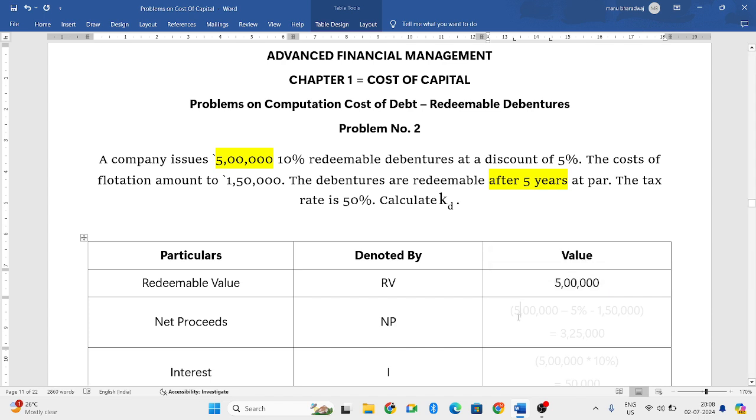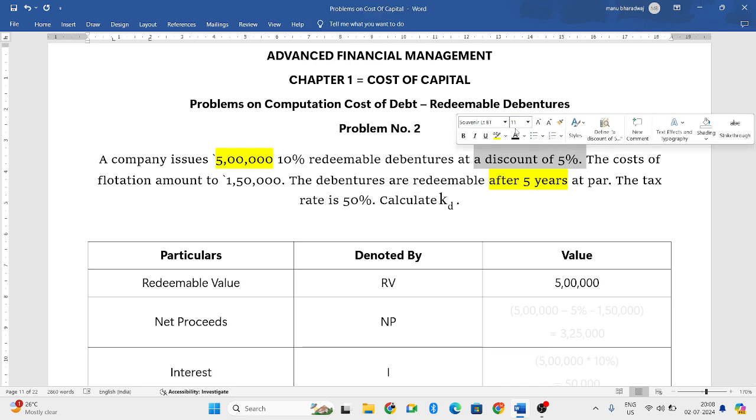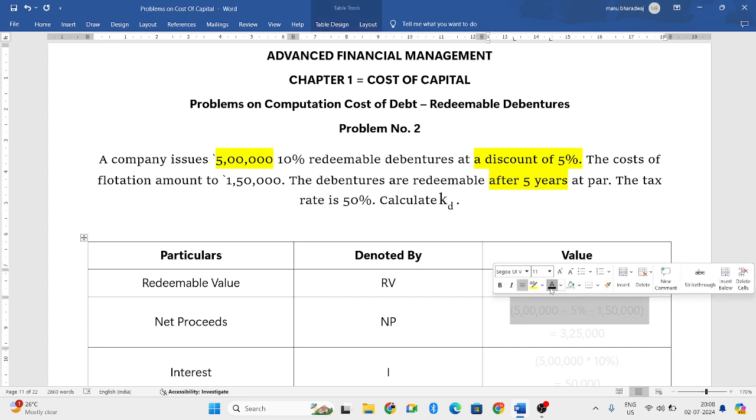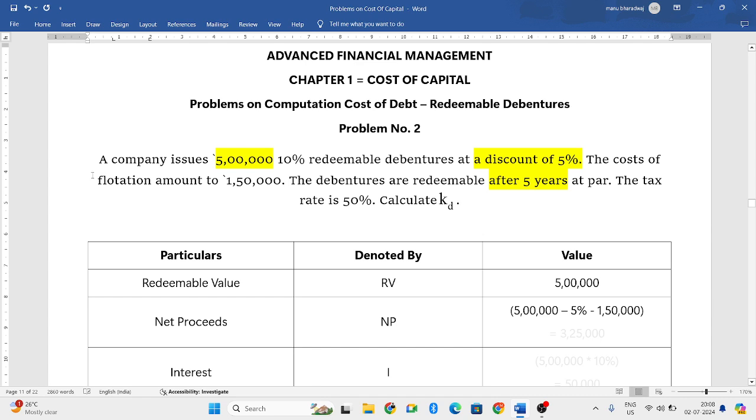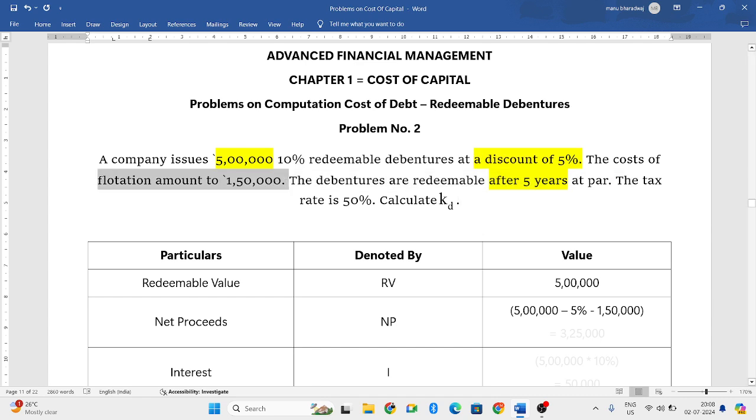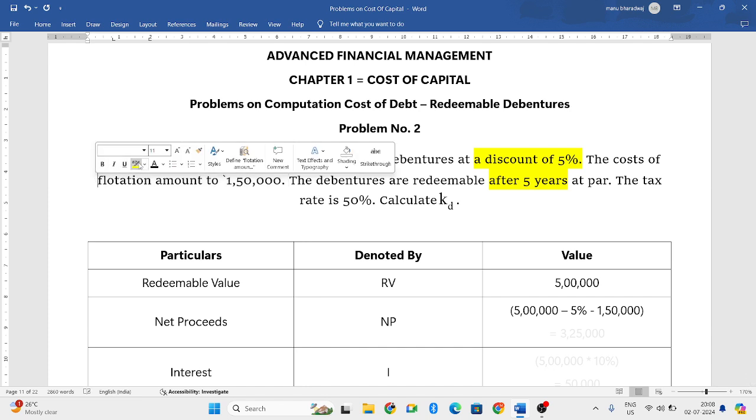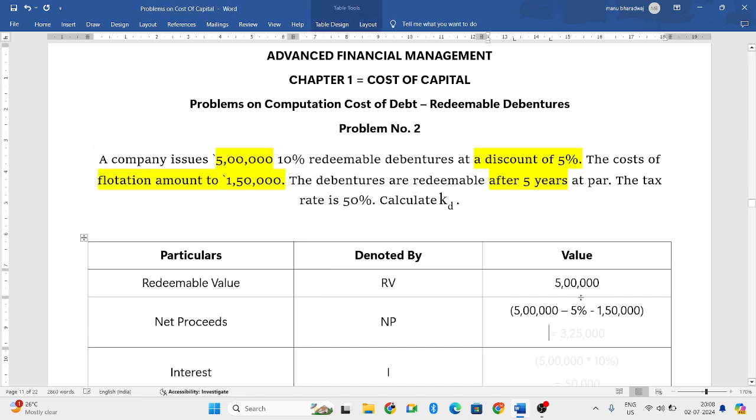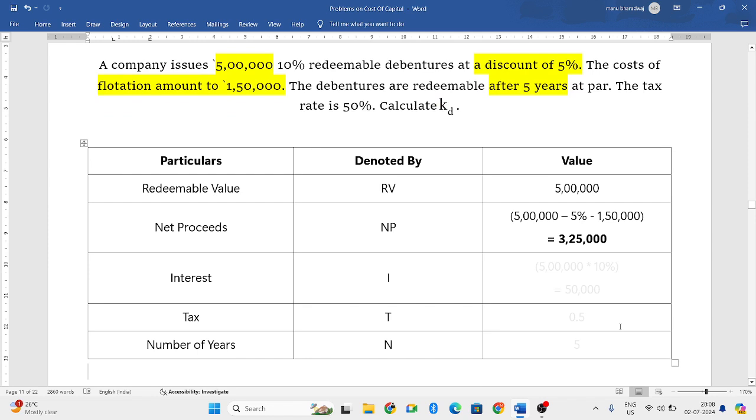Now, net proceeds. So, here if you observe, we are issuing at a discount of 5%. So, 5,00,000 minus 5% and again there is a flotation cost of Rs 1,50,000 that is an expense. That also has to be subtracted. So, 5,00,000 minus 5% and minus Rs 1,50,000. If you do, you get the net proceeds that is Rs 3,25,000.